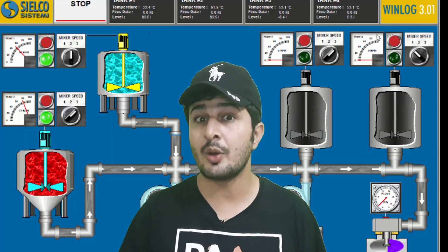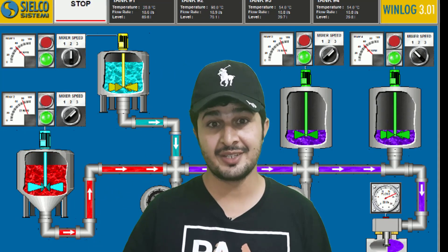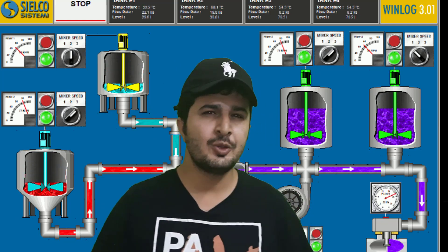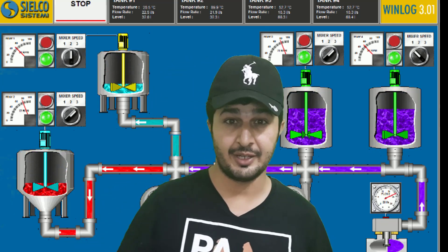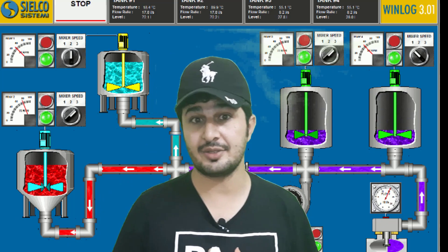The DCS system's main job is to control the process, and it relies on instrumentation, sensors, and controllers. Whereas SCADA is event-driven and prioritizes data acquisition.